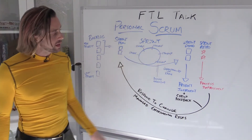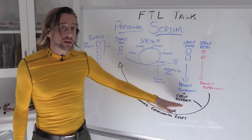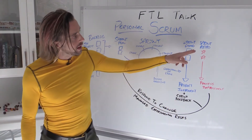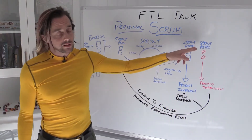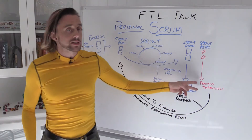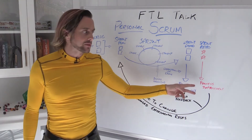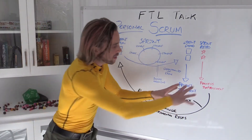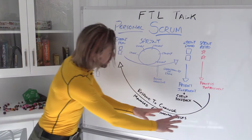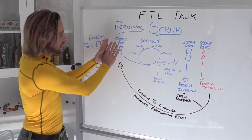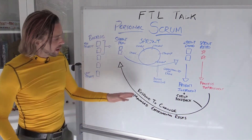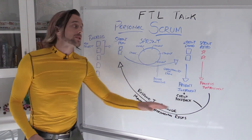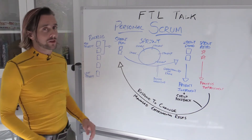Go ahead and do a demo at the end of that and get some feedback, which is really important. Then you're also going to go ahead and do your retrospective at this time. Go ahead and create some process improvement ideas from here, ways in which you can do better. Then you're going to take all that information and put it into your next sprint by responding to the change and creating some managed experimental risks for your next sprint.